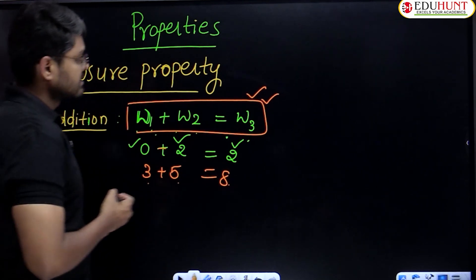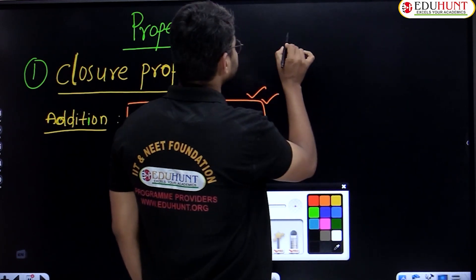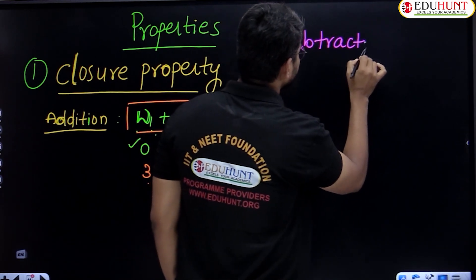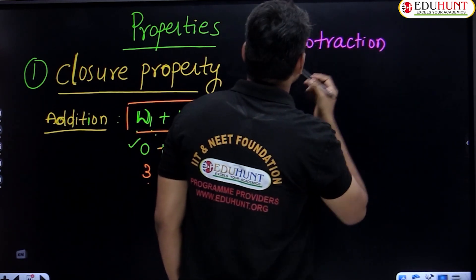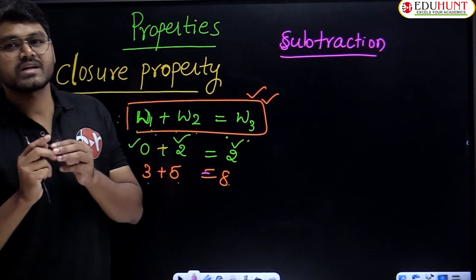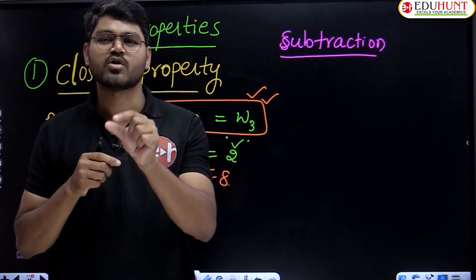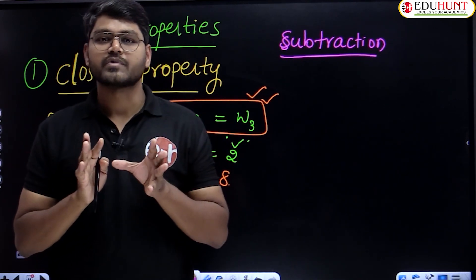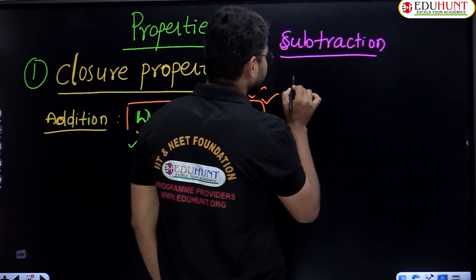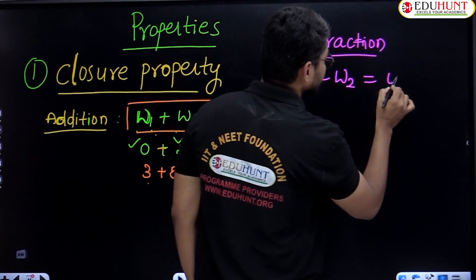Next, let us see subtraction. Whether closure property is possible or not. The difference of two whole numbers must be a whole number. Whole number one minus whole number two should equal whole number three.